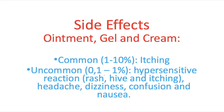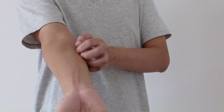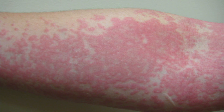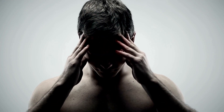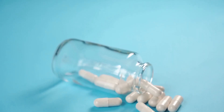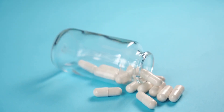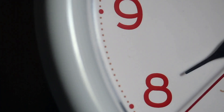Salicylic acid is a very effective drug but it can have some side effects. Commonly — in one to ten percent of patients — itching may occur. Uncommonly — in 0.1 to 1 percent of patients — a hypersensitive skin reaction, rash, hives, or itching may occur, as well as headache, dizziness, confusion, and nausea. These last ones are often experienced by patients using a high dose or using salicylic acid for a long time.